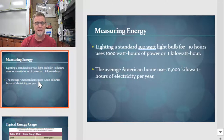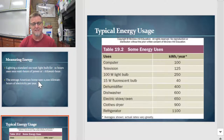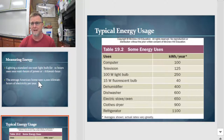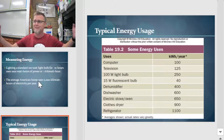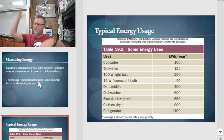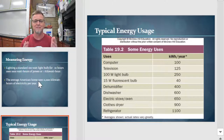The average American home uses 11,000 kilowatt-hours of electricity per year. That's a lot of juice, and it comes from things like computers, TVs, light bulbs, dishwashers, and refrigerators. It's not that refrigerators aren't efficient — it's that we like to window shop. We stand there with our heads in the refrigerator until we figure out what we want to eat, and all the cold air escapes. Think about what you want to eat before you open the refrigerator.